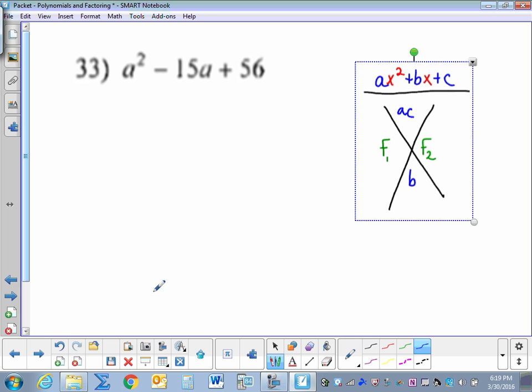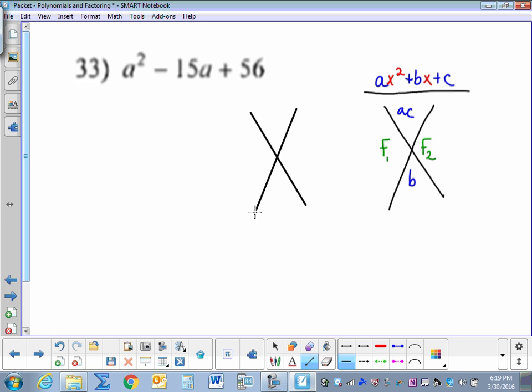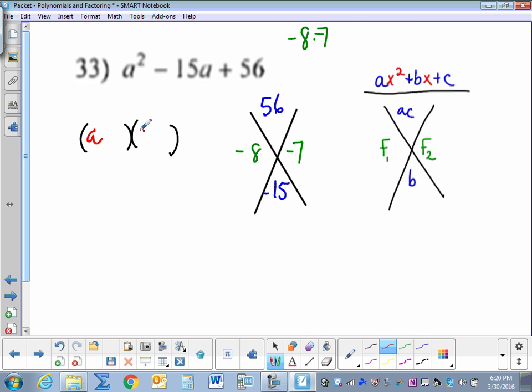Number 33, a squared minus 15a plus 56. So again, I begin by drawing an X. And I multiply a times c, which is 1 times 56, and I write b here, which is 15. So I'm going to think of factors that multiply to 56 and add to a negative 15. Well, I know like 8 and 7 multiply to 56, but to get a negative 15, they have to both be negative. So negative 8 and negative 7 multiply to 56, add to negative 15. So again, when I go to factor, since the leading coefficient is 1, I know the only combination to get a squared is a times a. And I have factors that multiply to give me 56 and add to give me negative 15.